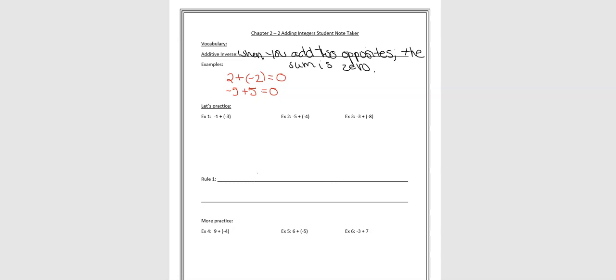So let's do some practice on what this looks like, and then we're going to discover some rules to make this a little easier. In our first example, we have negative 1 — I'm going to show a negative 1 with a little red negative sign here — and I'm going to add three more negatives. Now how many do I have total? I have 1, 2, 3, 4. So this is going to equal 4 negatives. That is going to be my answer.